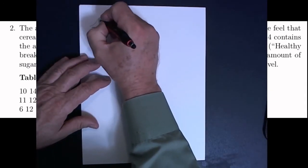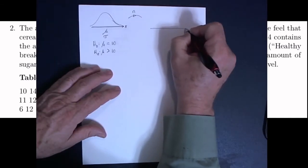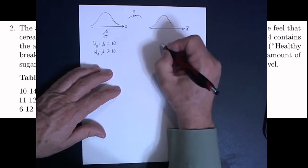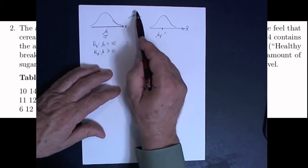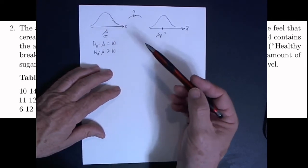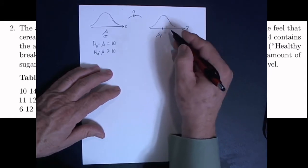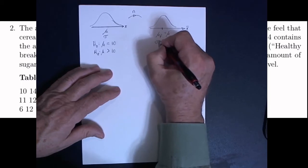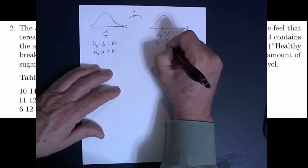Some assumptions here are that this is possibly normally distributed. What we're going to look at is this second distribution, which is the distribution of those sample means. Under the right assumptions, this distribution will be normally distributed. The mean of all of these sample means — thinking about every single sample of the same size as the sample we took — by the central limit theorem is going to be the same as the population mean. The standard deviation of those sample means is going to be the population standard deviation divided by the square root of n.